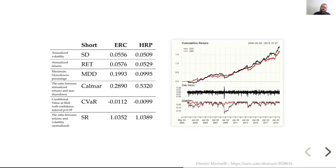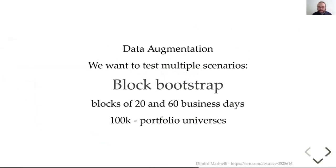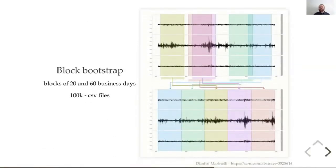Clearly, you want to know more about the behavior of these strategies — you don't want to test them on only one particular path. To do this, there is a technique in finance called the block bootstrap. In practice, it is a data augmentation technique where from one time series, you can construct as many time series as you like. You take your multivariate time series, extract a block of fixed length, sample them randomly, and recompose a new time series. We did this 100,000 times, creating 100,000 CSV files.